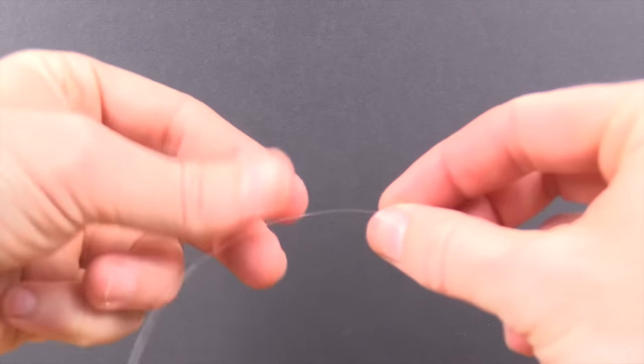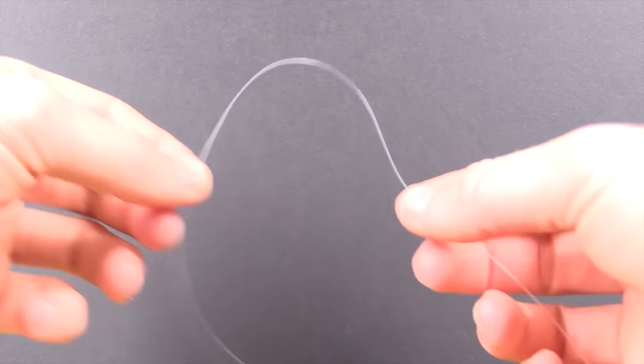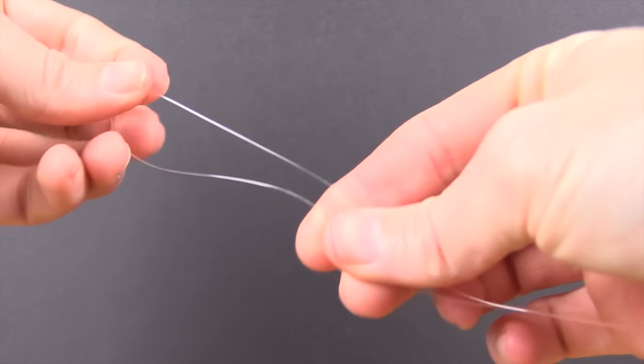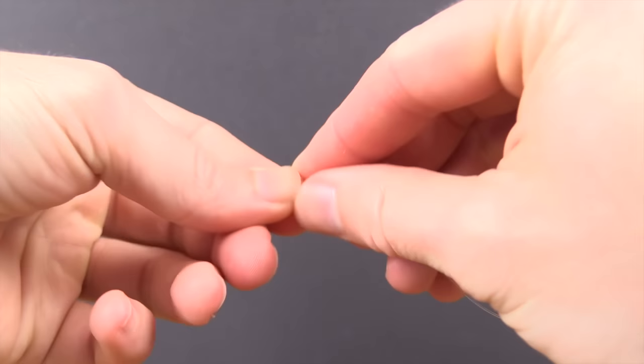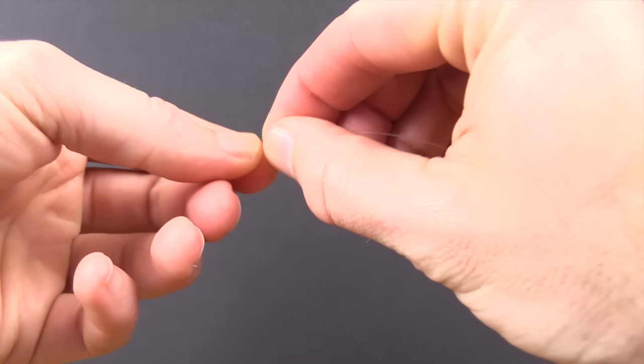The first step is to put the hook down and double over the line. I typically get about five or six inches, just to make sure that it's easy to tie and you have plenty of line to work with.